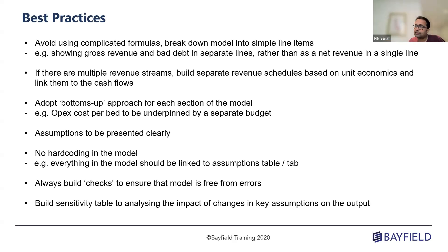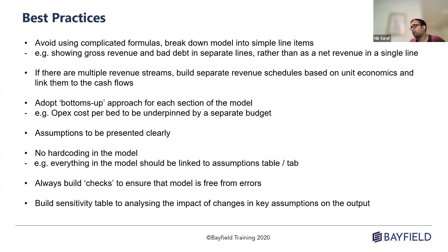Present assumptions clearly — always in blue so people understand these are the only inputs to change; anything in black they don't need to touch. No hard coding in the model, no matter what you're building. Hard coding makes the model static and defeats its purpose — everything should be linked to assumptions. If you're struggling to build a formula for a module, Google it, YouTube it, or ask for help, but never hard code. Build checks to ensure your model is free from errors. Lastly, you can always build a sensitivity table to analyze the impact of changes in key assumptions on the output, which in this case would be NOI.